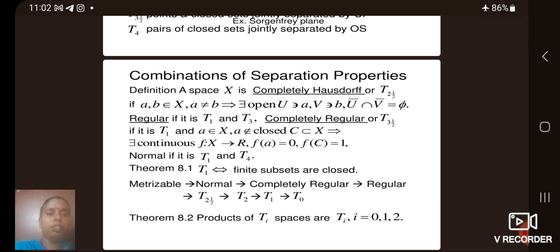Definition: first definition is a space X is said to be completely Hausdorff space if a and b belong to X, a not equal to b implies that there exist open sets U containing a, V containing b, such that U bar intersection V bar equals empty set.